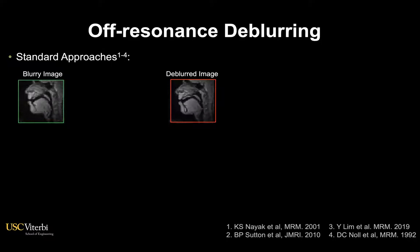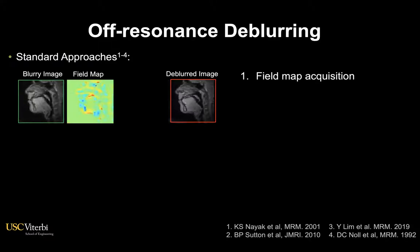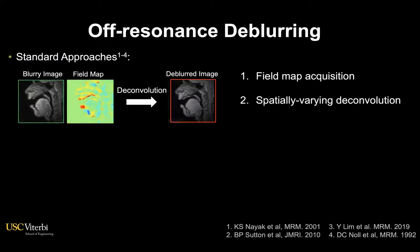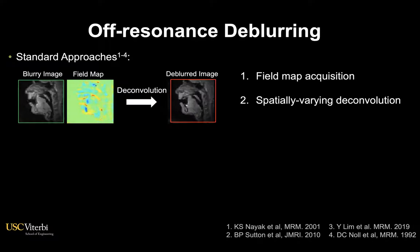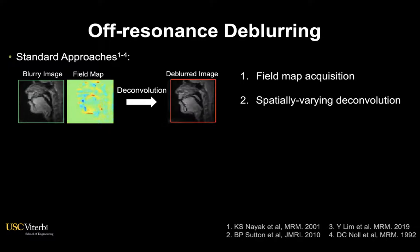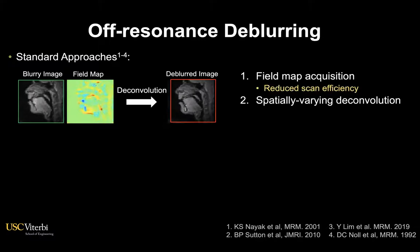Several deblurring methods exist and most of them involve two general procedures: field map acquisition and spatially varying deconvolution. The field map is a spatial map that contains information about the source of blurring, which is essential for correcting this type of artifact, whereas the acquisition of this field map often reduces scan efficiency.